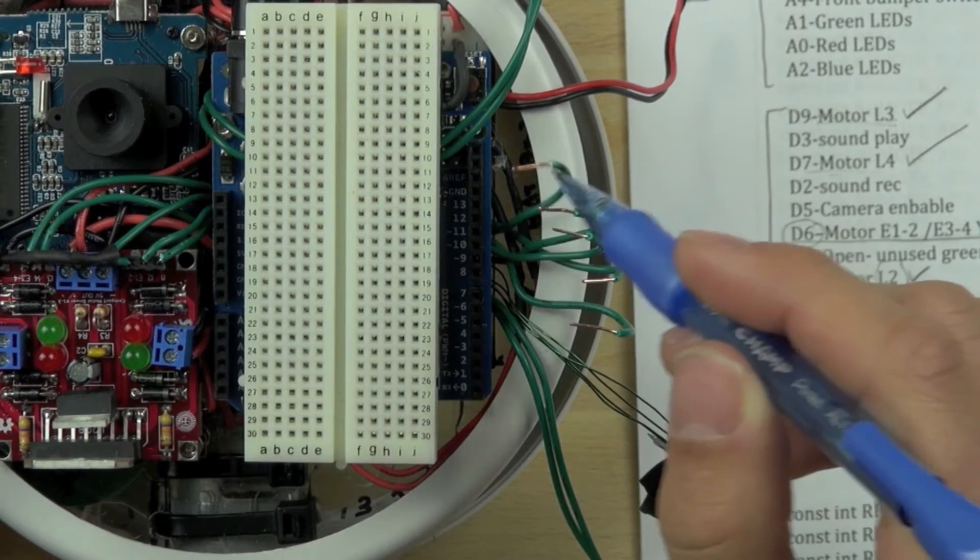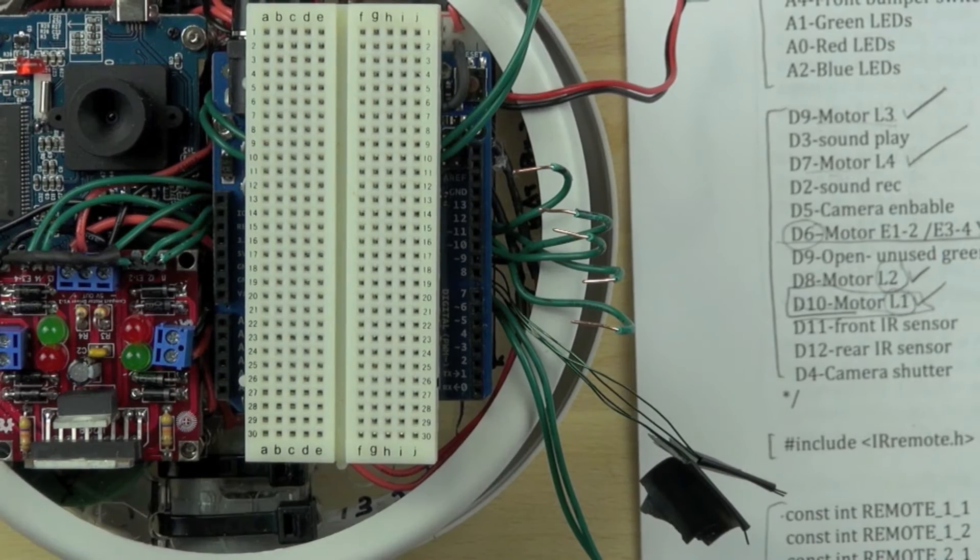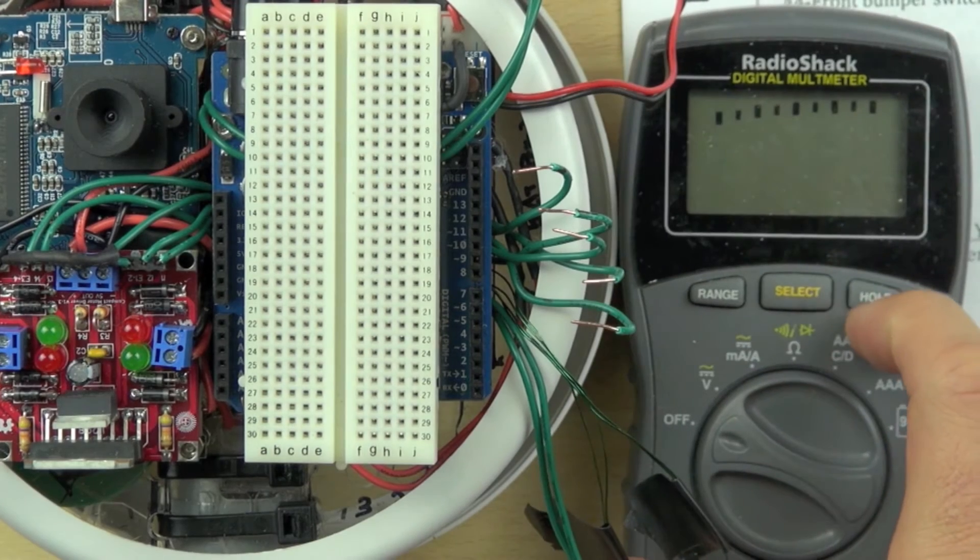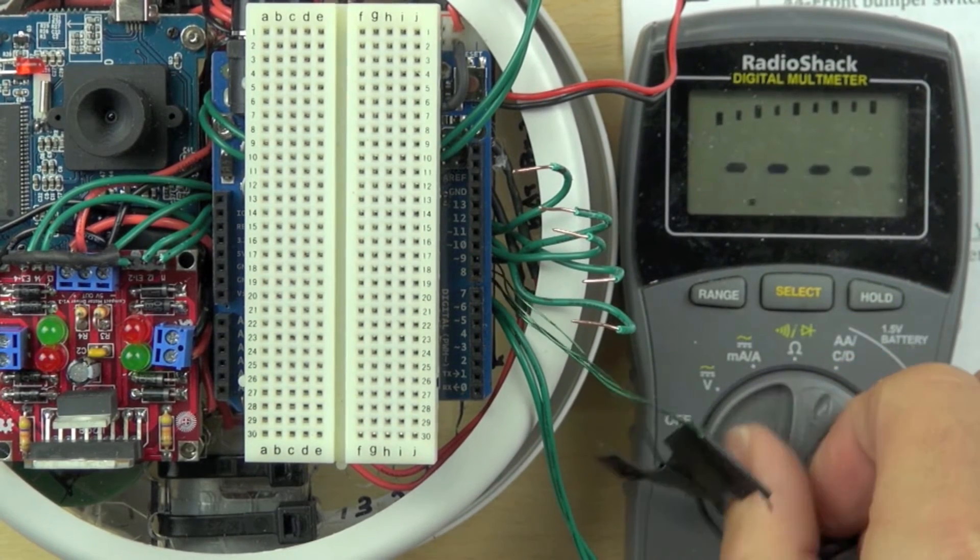In this video, we're going to connect our motor controller to our Arduino. We've run the wires from the motor controller underneath the Arduino. We just need to figure out which wires are which so we can determine what pins to connect those wires to.